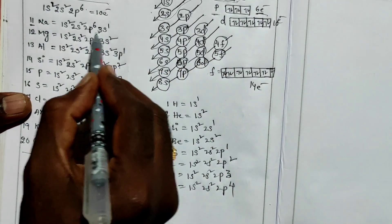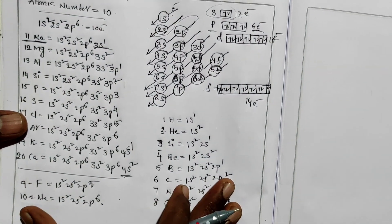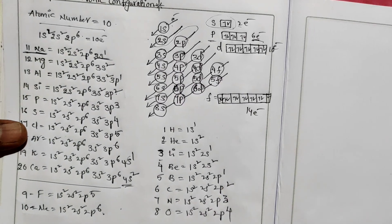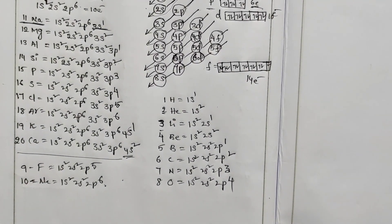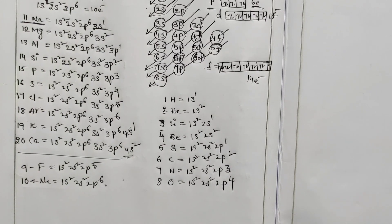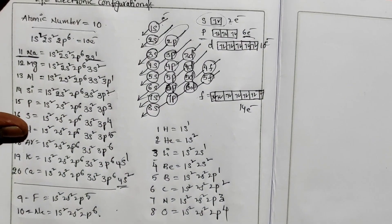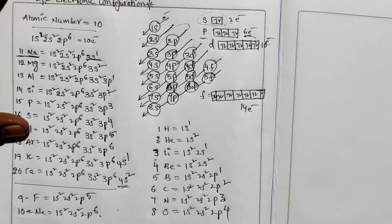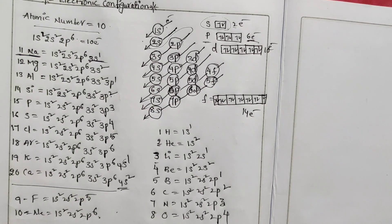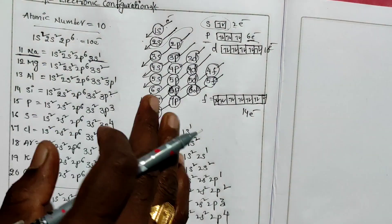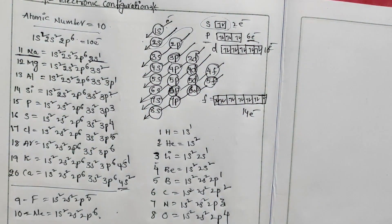Atomic number 10, neon: 1s2, 2s2, 2p6 — 2p is now complete. So like this, we have covered the electronic configuration of elements 1 to 20. This diagram used for the filling order is called the Moeller chart, named after the scientist Moeller who introduced it. Thank you.